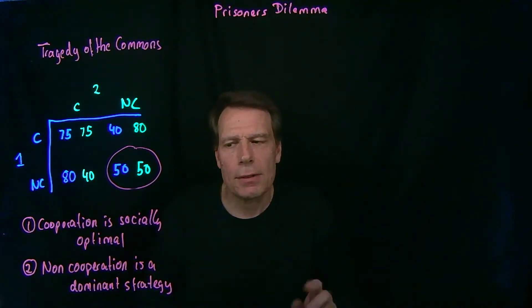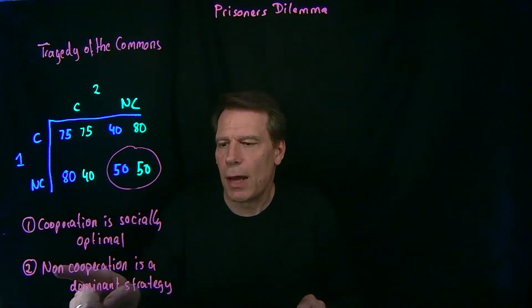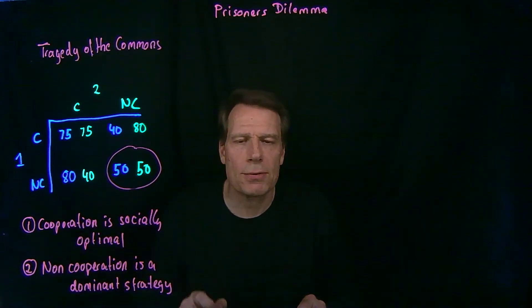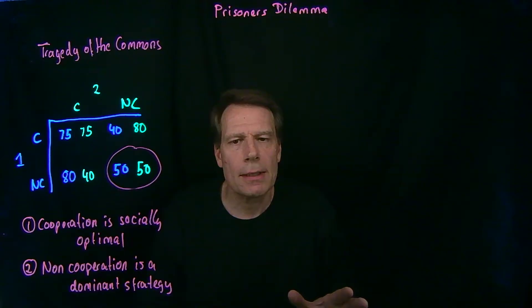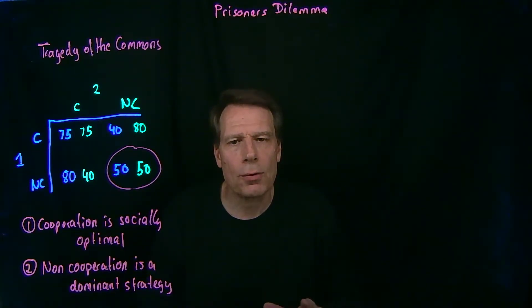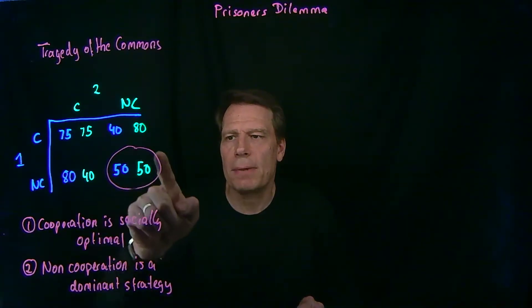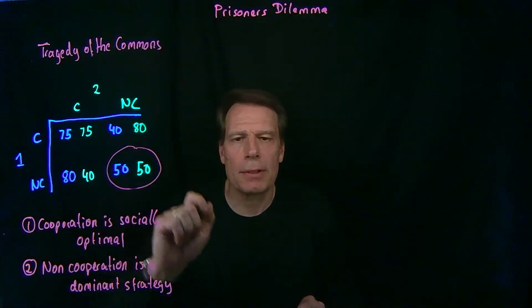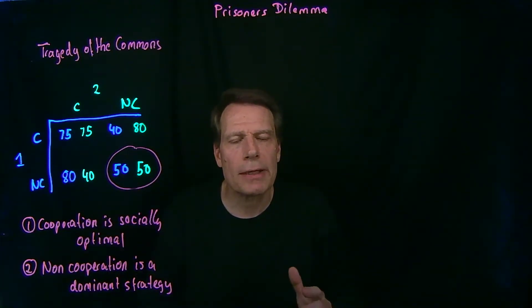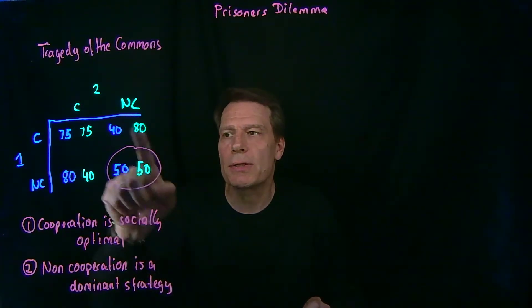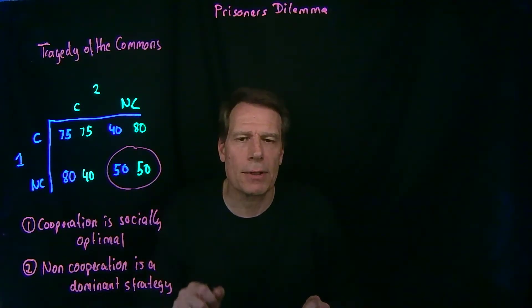The second feature was that non-cooperation is a dominant strategy. No matter what the other player does, it's in each player's best interest to not cooperate, to not conserve. As a result, we end up in this suboptimal equilibrium, where each player only gets 50, and the overall surplus is the lowest in the entire matrix.